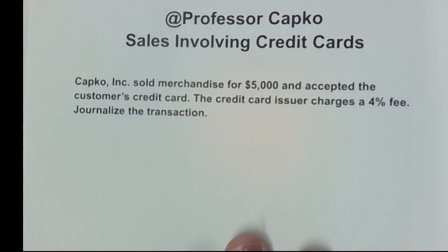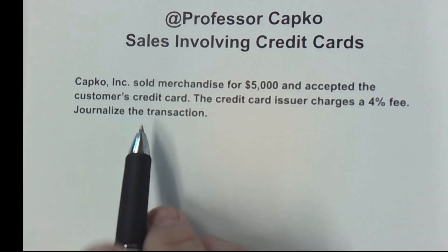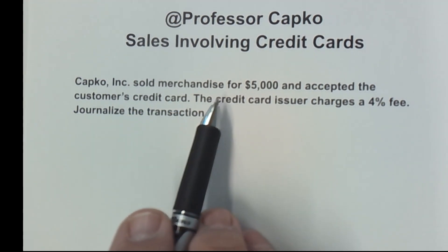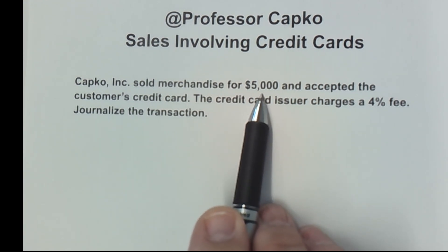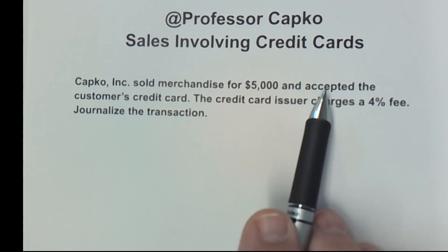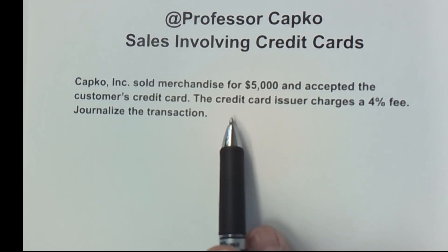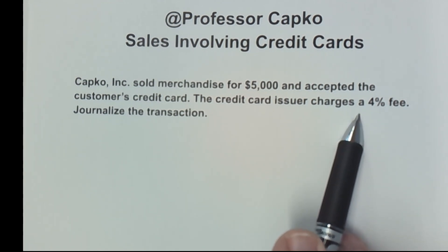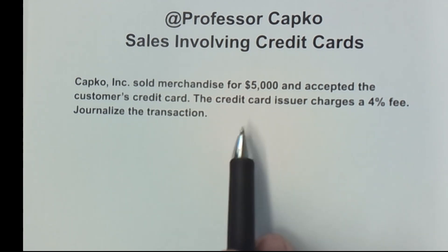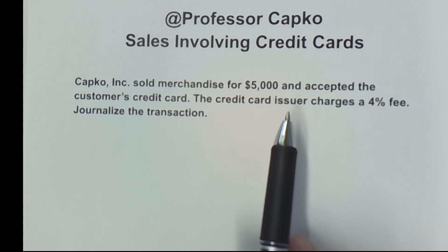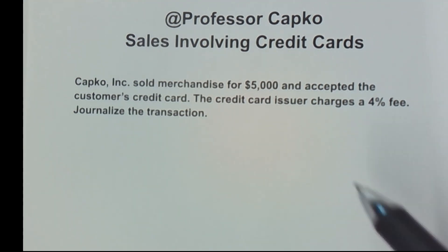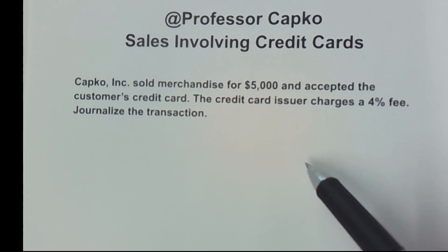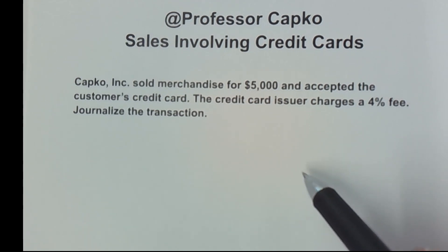In this transaction we've got Capco Inc selling merchandise for $5,000, and for that purchase they accepted a customer's credit card. The credit card issuer charges the merchant a four percent fee. Journalize the transaction. This is a typical transaction that you might see in a problem involving a credit card sale of merchandise.